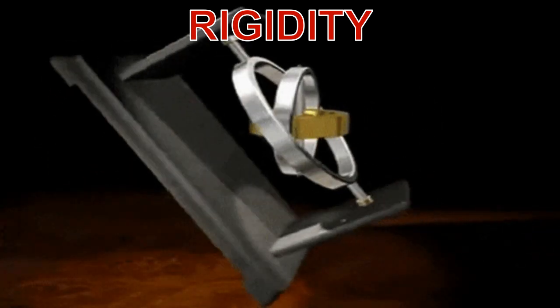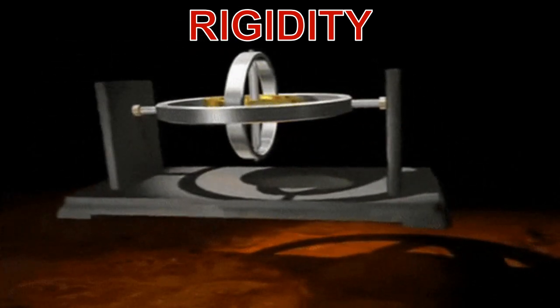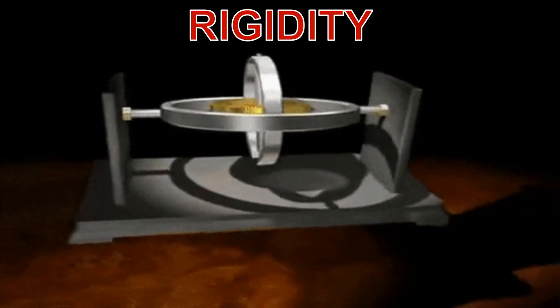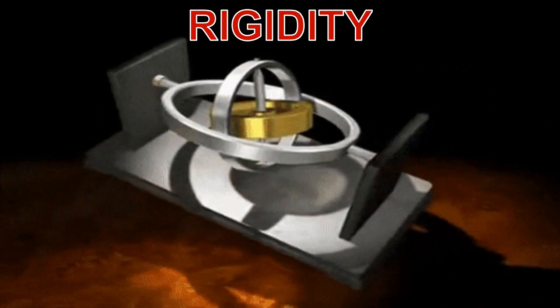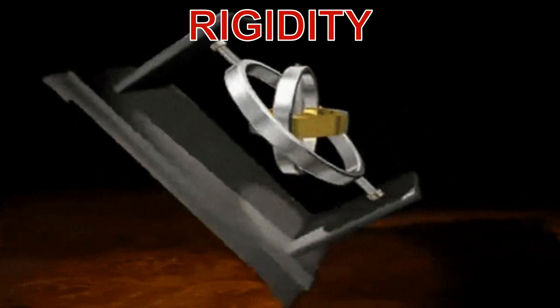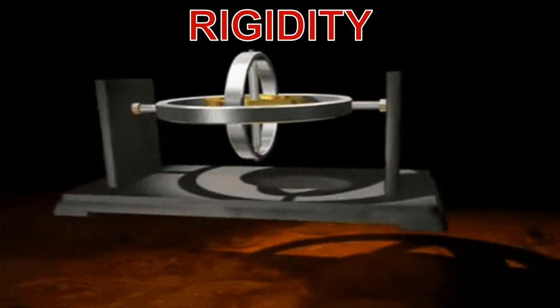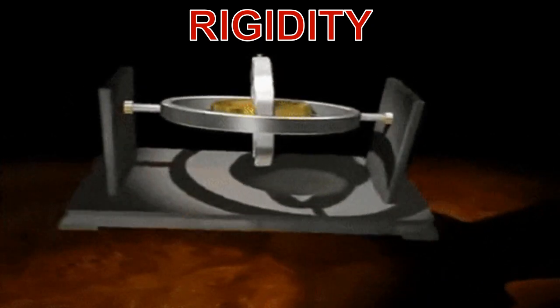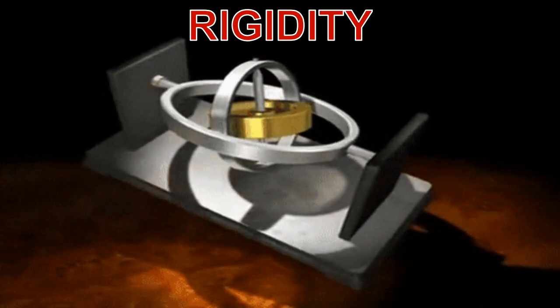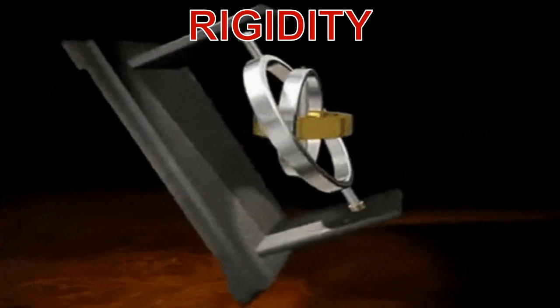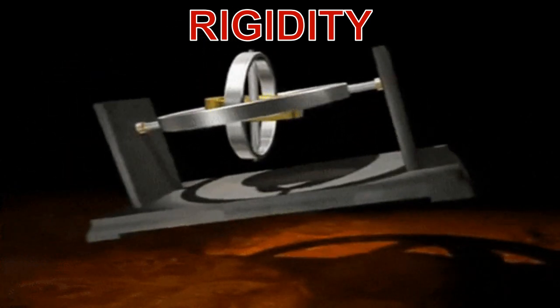This clip shows the frame being tilted, but the rotor remains horizontal. Whatever angle the frame is tilted to, the rotor tries to remain in its original position. The frame could simulate an aircraft pitching, and if a pointer was attached to the spin axis frame, it could be used to indicate pitch angle, for example.